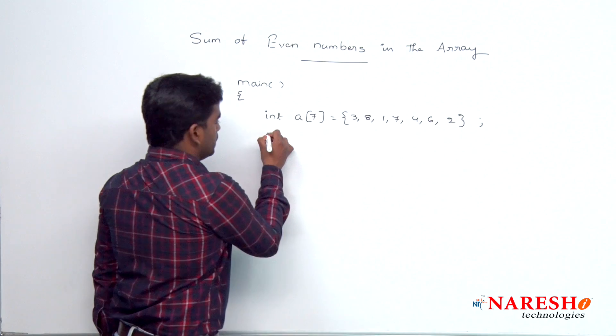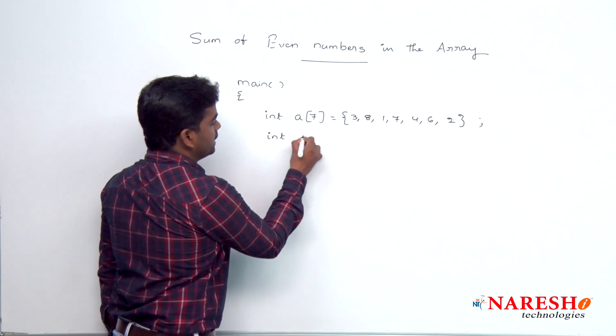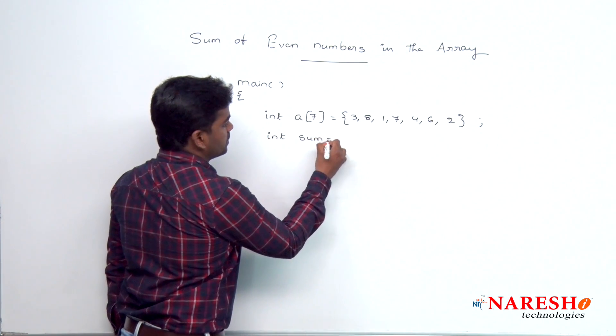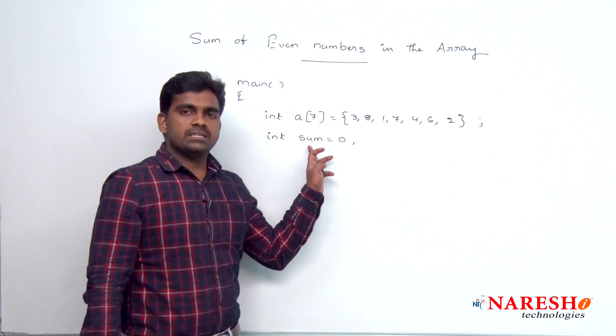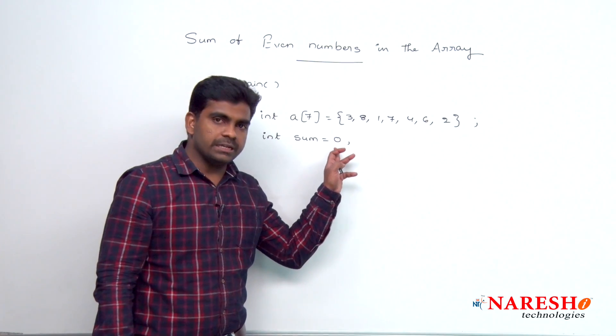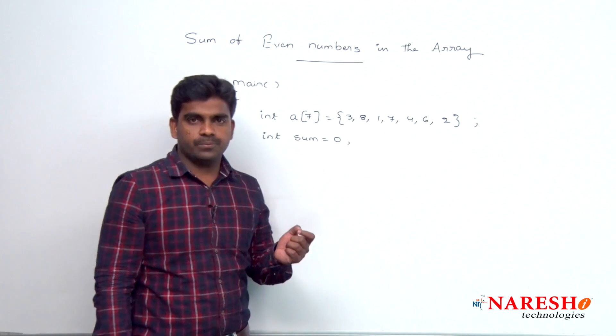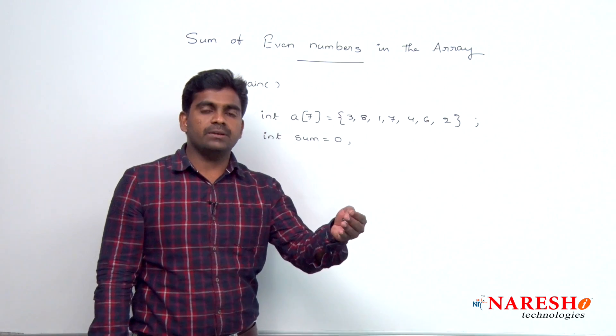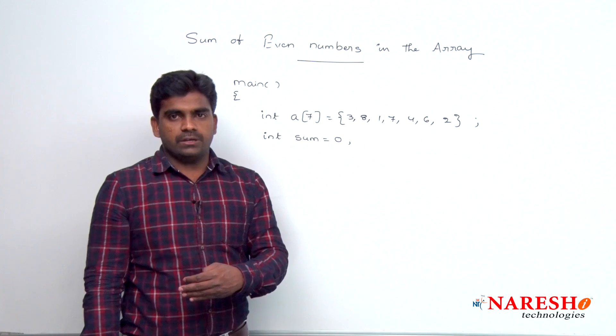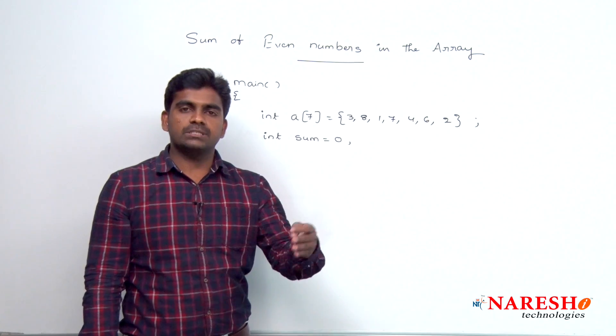And here to add, we are declaring one variable called sum and initialize with 0. If you are not initializing with 0, it will initialize with a garbage value. We cannot assign values to garbage values, because finally you will get one more garbage value whenever we keep on adding the elements to garbage value.